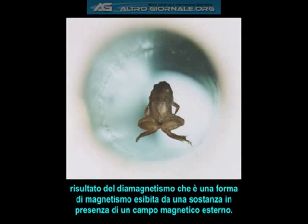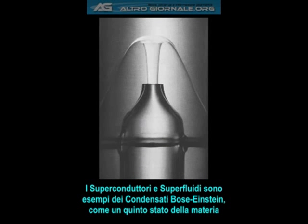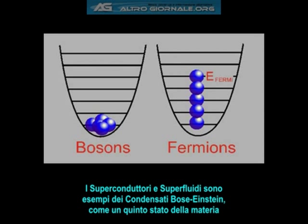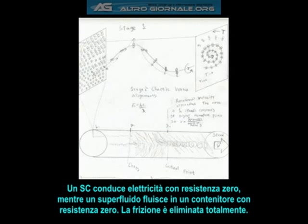This is the same diamagnetism that levitates the frog. Superconductors and superfluids are both examples of Bose-Einstein condensates, which is kind of like a fifth state of matter. A superconductor conducts electricity with zero resistance, while a superfluid flows through a container with zero resistance.